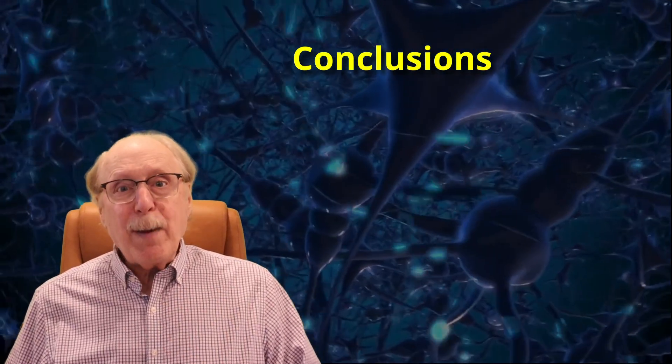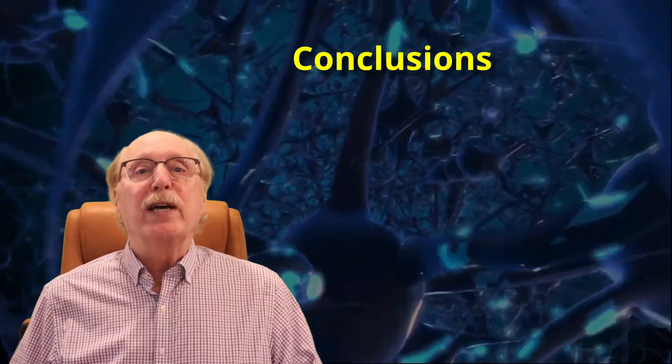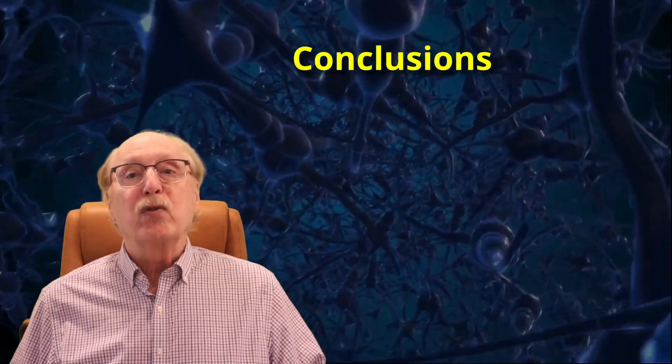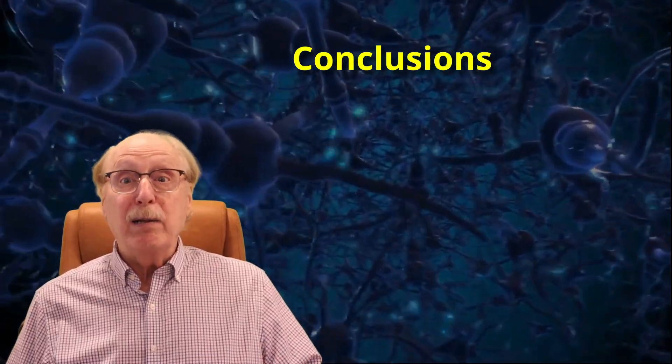So to wrap up, this circuit shows that even a simple function like selecting a neural column can be done in a biologically plausible way, using real spikes, real timing, and real learning rules. This bottom-up approach, building cognition from the ground up, may be our best path forward toward more human-like AI. Not abstract algorithms, not magic black boxes, but circuits that do real work.